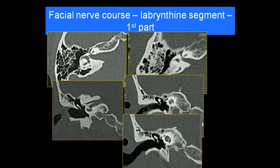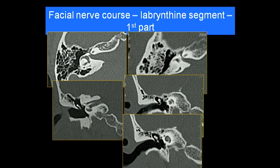First we look at the labyrinthine segment. The seventh and eighth nerves enter through the internal auditory canal, where a small bony projection called the crista falciformis divides them. The facial nerve proceeds anteriorly — that is the labyrinthine segment, the first part of the facial nerve canal. It then makes almost a 160–170 degree turn, and that slightly widened area is the geniculate ganglion. From there, a linear channel going anteriorly is the greater superficial petrosal nerve.